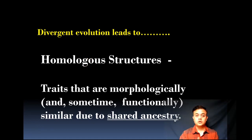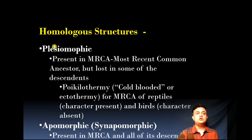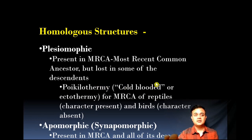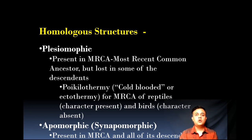Homologous structures can be of two types: plesiomorphic and apomorphic. Plesiomorphic means the character state is present in the most recent common ancestor (MRCA) but lost in some descendants. For example, poikilothermy — cold-bloodedness or ectothermy — was present in the MRCA of reptiles and birds. But birds are no longer poikilotherms; they are homeotherms, i.e., warm-blooded. The ancestor had it, but some descendants lost it — that is plesiomorphic.